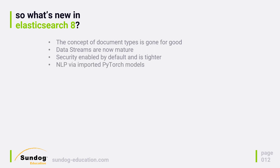Another big change is NLP — natural language processing. Artificial intelligence is all the hotness these days, and they've found a way to incorporate that into Elasticsearch. If you have an NLP model in the form of a PyTorch model — a framework for deep learning models — you can import that into Elasticsearch for what's called inference at ingest. For example, you might have a PyTorch model for NLP that does sentiment analysis. As you ingest text coming in from customers, you can automatically populate a field in your index indicating the sentiment of that customer.